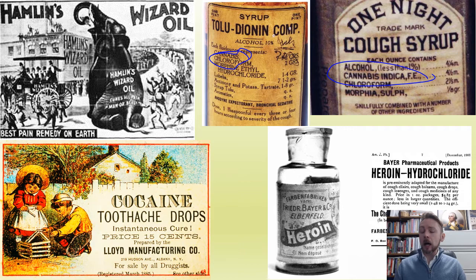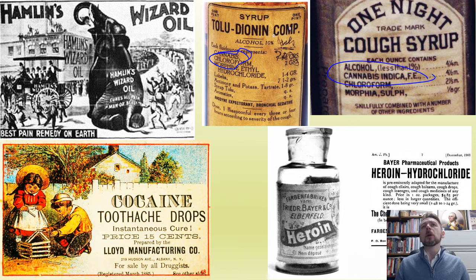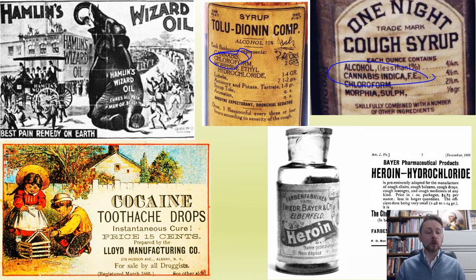In the 19th century, you could pretty much throw anything into a bottle and sell it as a cure for whatever you wanted. One night cough syrup contained alcohol — obviously you're going to sleep because you'll be drunk. Cannabis was in many drugs of the time period, along with chloroform, morphine, and sulfur. All of these chemicals didn't really cure illnesses, or they provided such a strong cure that people became addicted — as in the cocaine toothache drops advertised with wonderful kids on the front. Lil Junior is teething, his teeth hurt — cocaine is the answer.